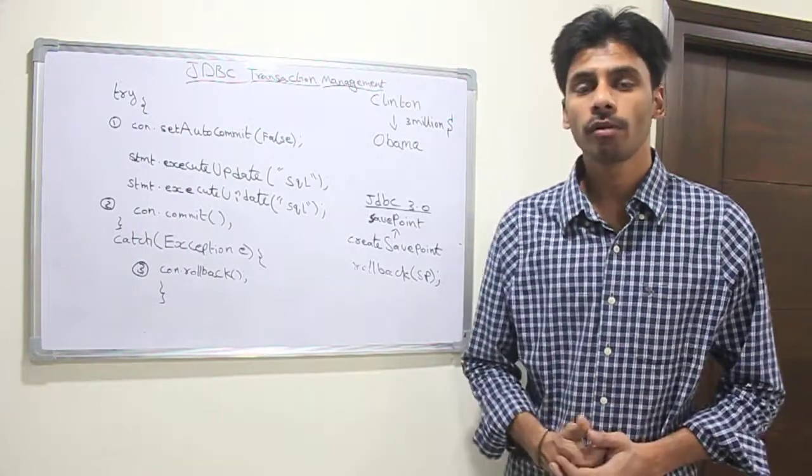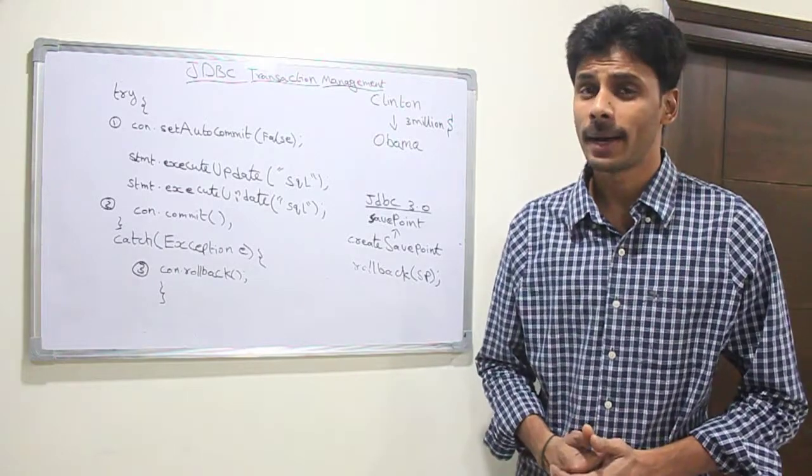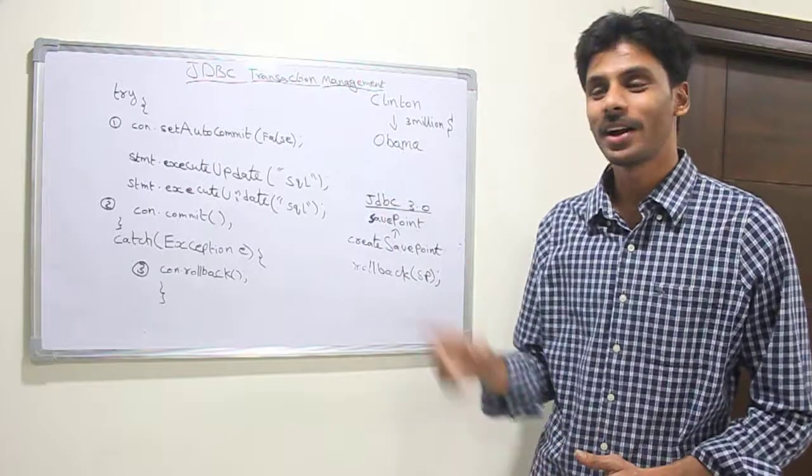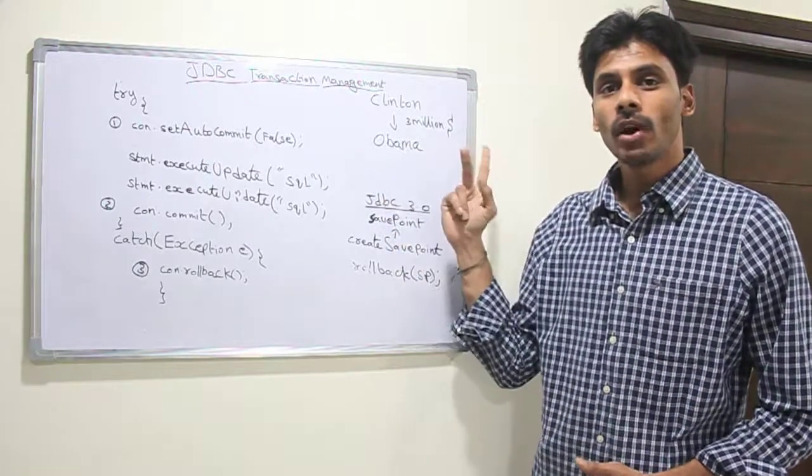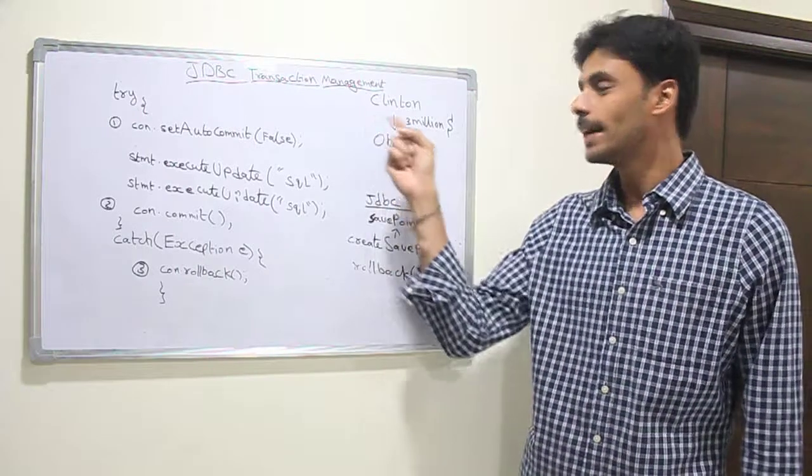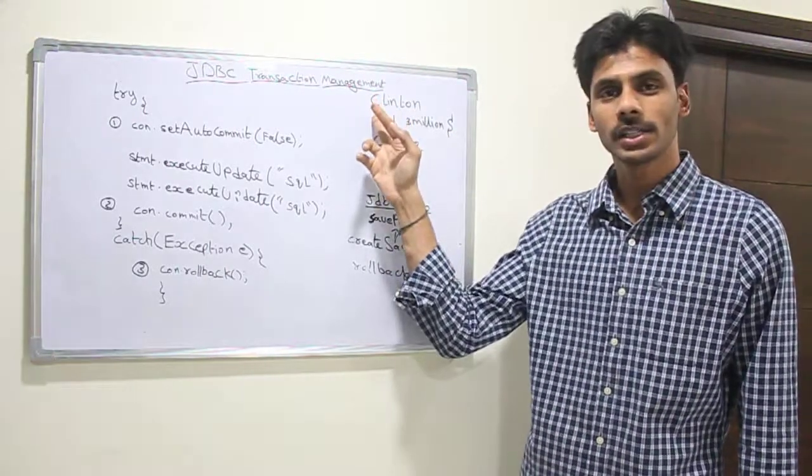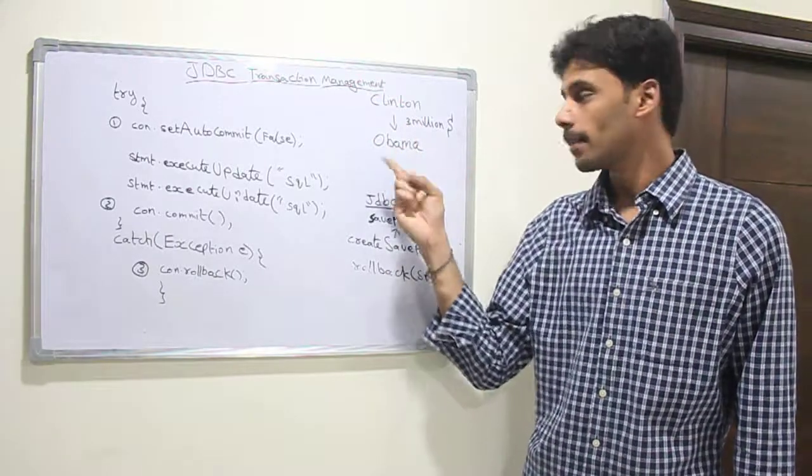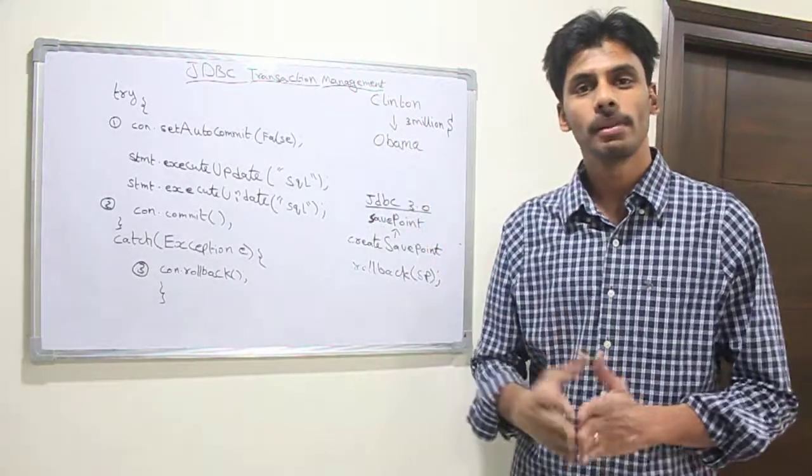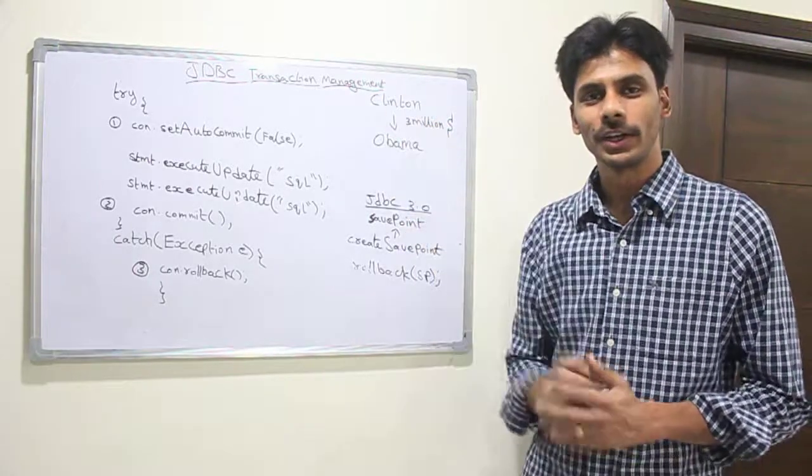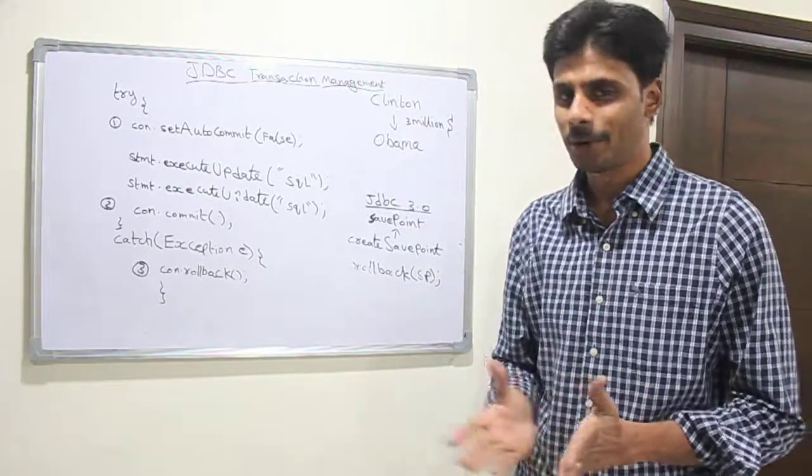A good example for a transaction is online money transfer. Let's say Mr. Clinton is transferring 3 million dollars to Obama. An online money transfer involves at least two update statements. One update statement will deduct 3 million dollars from Clinton's account row in the account table. Then Obama's row will be updated in the account table with a new balance by adding 3 million dollars, let's say for his party campaign or whatever.